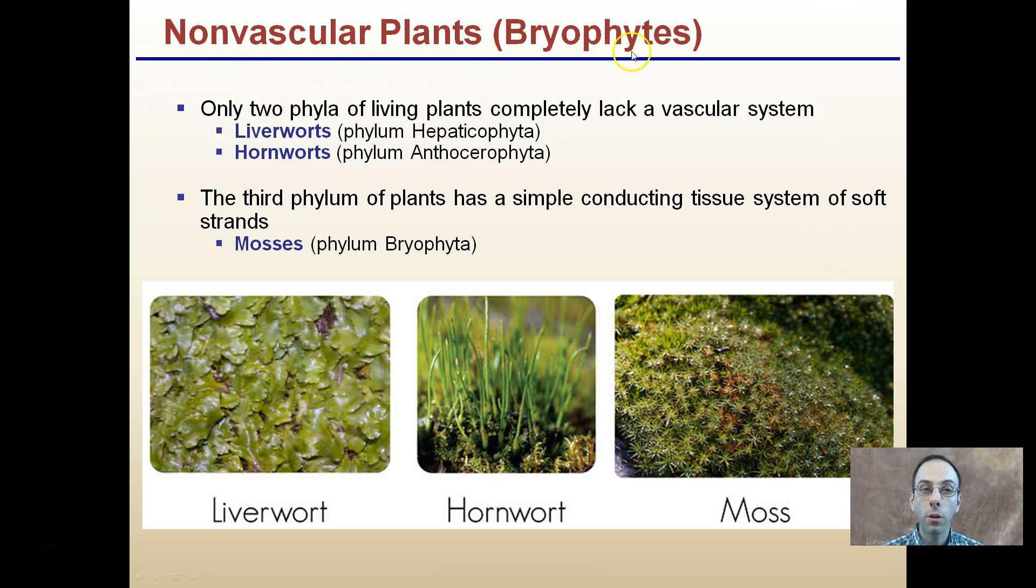Talking about non-vascular plants or bryophytes, there's actually some other classifications: liverworts, hornworts, and mosses. That's what a liverwort, hornwort, and moss looks like. I chose mosses - you're probably most familiar with that. But all of these pretty much lack a vascular system. Mosses have a very simple conducting tissue, soft strands, but for the most part, these are all considered non-vascular.